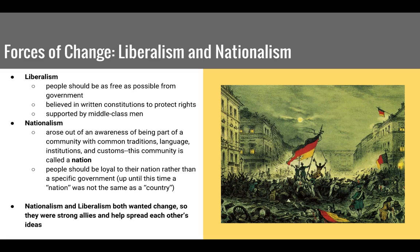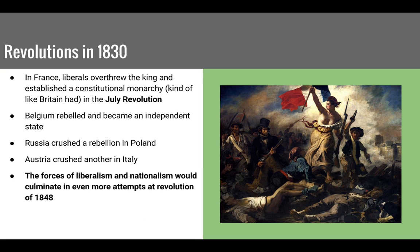In some cases, liberal and nationalist thinkers wouldn't be able to work together. These forces combined into a series of revolutions starting in 1830 in France, where liberals overthrew the absolute monarch put back by the Congress of Vienna. In the July Revolution, they established a constitutional monarchy similar to Britain's. Belgium also rebelled against the Netherlands to become an independent state. There were rebellions in Poland, but Russia crushed those. Italy began fighting against Austrian rule, as northern Italy had been given to Austria at the Congress of Vienna. These were early seeds of rebellion.